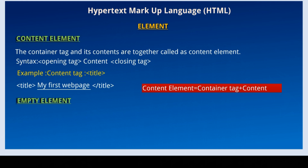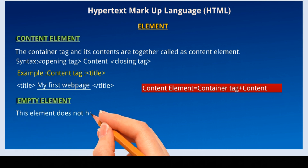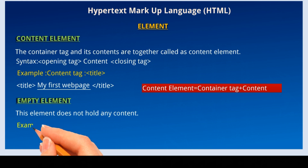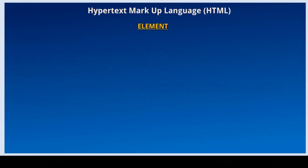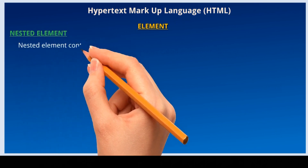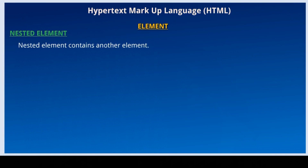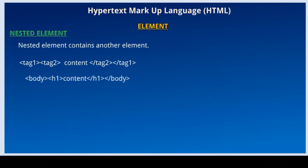Now we can see empty element: this element does not hold any content. For example, the BR tag — this tag is used for inserting a new line in a web page, so it does not require any content. Next element is nested element. Nested element contains another element. For example, tag 1 holds tag 2, so tag 1 is called as nested element. Here body holds h1, so body is called as nested element.